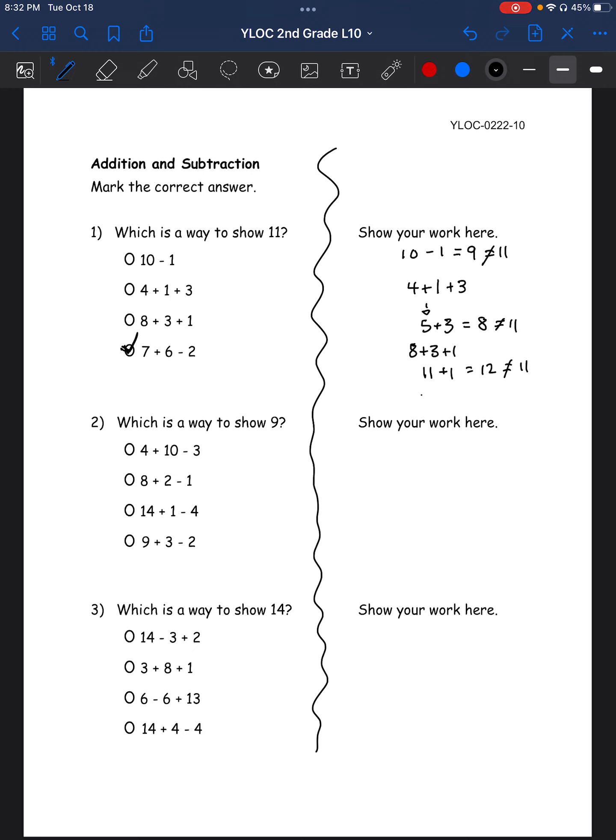But let's check it out anyway. 7 plus 6. So 7, 8, 9, 10, 11, 12, 13. And then minus 2. So 13 minus 2 equals 11, which equals 11. So that checks out. And that's why it's this last option. Let's go on to the last page.